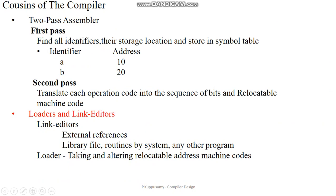There are different kinds of assemblers: 1-pass assembler and 2-pass assembler. In the 2-pass assembler, in the first pass we find the identifiers and their storage locations, then store them in a symbol table — a data structure, typically a hash table. For example, identifier A is stored at address location 10, and B at address location 20. In the second pass, each operation code is translated into a sequence of bits, producing relocatable machine code.